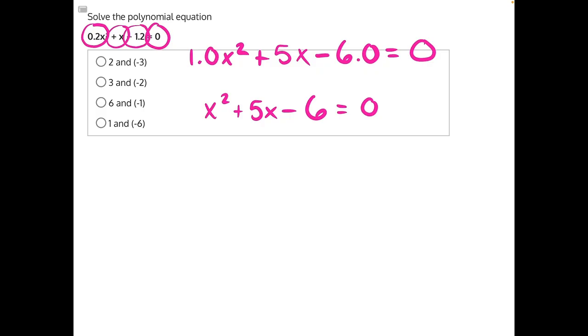So let's start. We need to find two numbers that would add together to give us our b value which is equal to 5 and multiply together to give us a times c which would be 1 times negative 6 or negative 6.